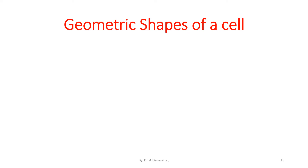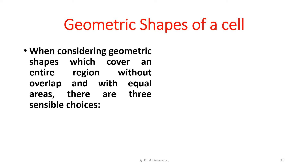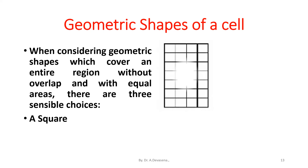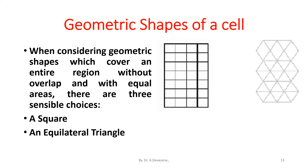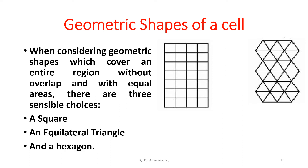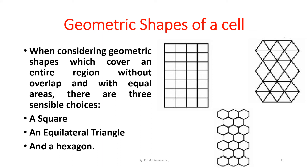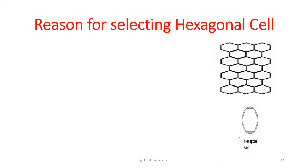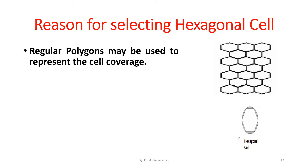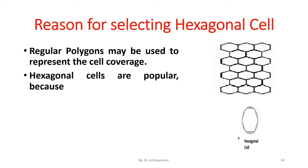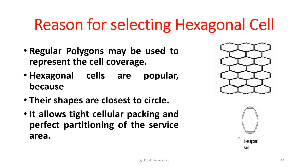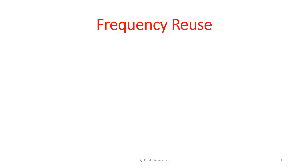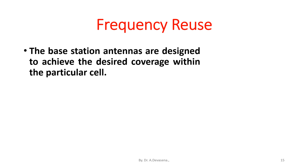When considering geometric shapes which cover an entire region without overlap and with equal areas, there are three sensible choices: square, equilateral triangle, and hexagon. Hexagonal cells are popular because their shapes are closest to a circle. This allows tight cellular packing and perfect partitioning of the surface area, and the base station antennas are designed to achieve the desired coverage within the particular cell.